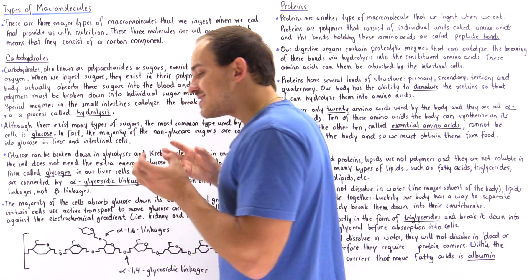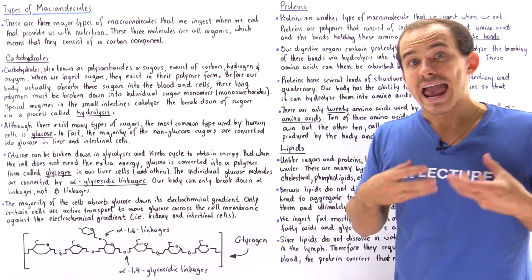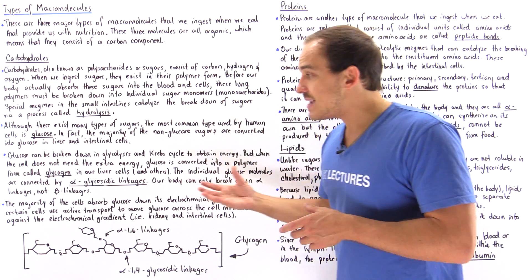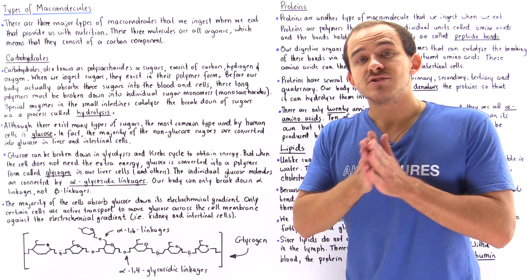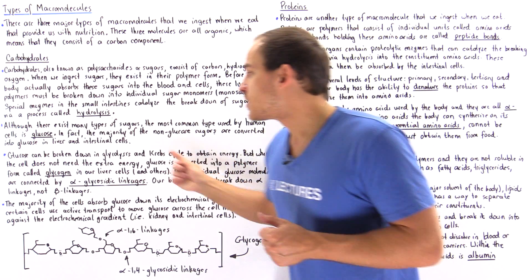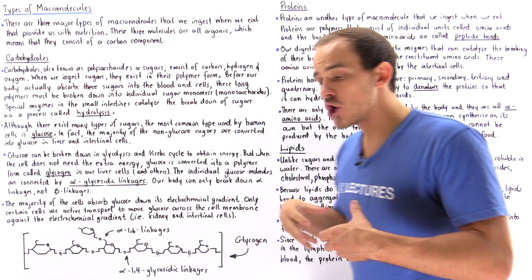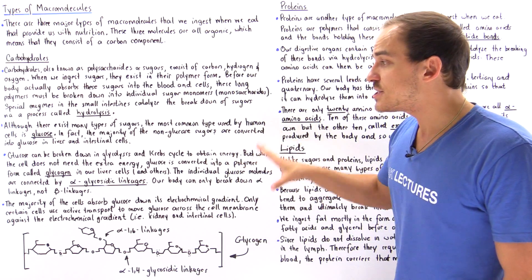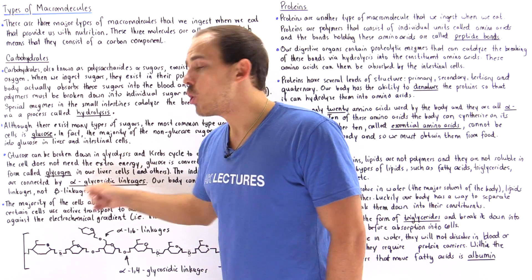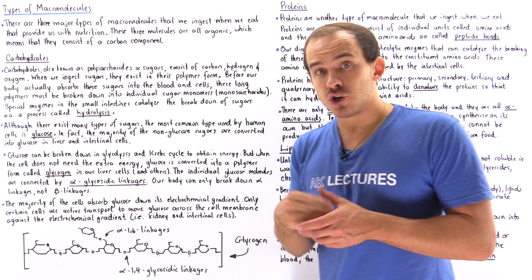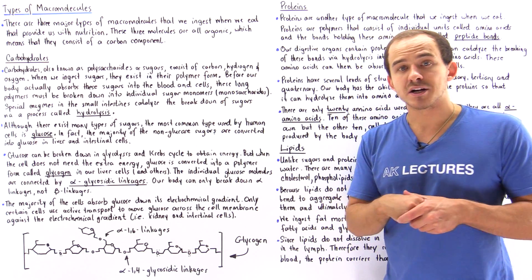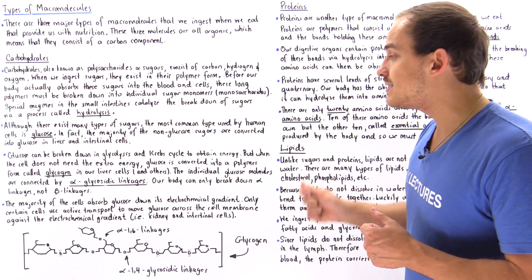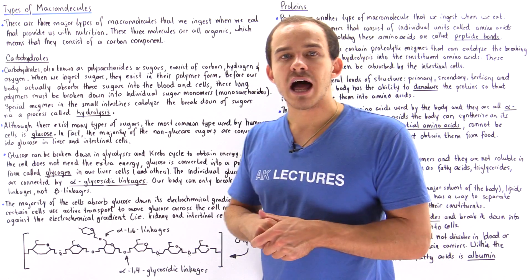When a cell contains ample amounts of ATP and doesn't need to form more, it can take glucose and store it in a polymer form known as glycogen. Our liver cells, muscle cells, and other cells in the body store glucose in this polymeric form. The individual glucose monomers in glycogen are connected by special bonds known as alpha-glycosidic linkages or alpha-glycosidic bonds.